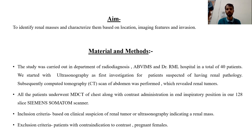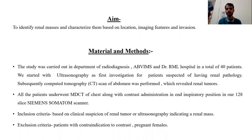This study aims to identify renal masses and characterize them based on location, imaging features, and enhancement pattern. A study was carried out in the Department of Radiodiagnosis on a total of 40 patients. We started with ultrasound as the first investigation for patients with renal pathology, and then a contrast CT was performed on a 16-slice multislice CT scanner.